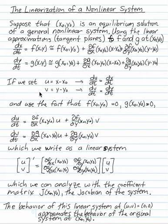So if you set u equal to x minus x naught and v equal to y minus y naught, first you know that du dt is equal to dx dt. x naught and y naught are just constants if you differentiate both sides with respect to t. And you know that f of x naught, y naught, and g of x naught, y naught is zero because x naught, y naught is an equilibrium point.